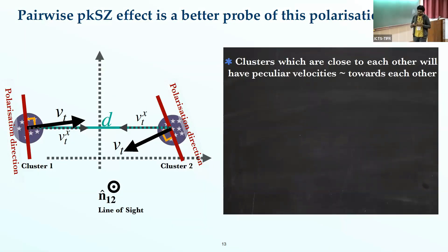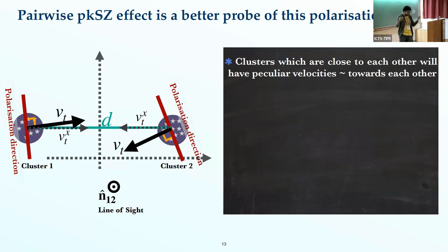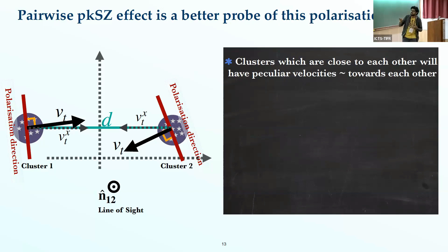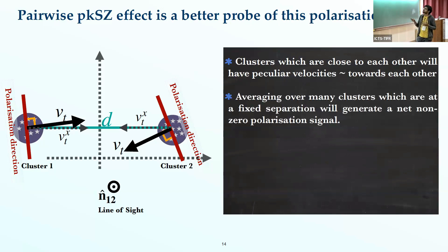Next we considered how to make this signal detectable with upcoming telescopes, which led to the idea of the pairwise polarized Sunyaev–Zeldovich effect. Now looking at galaxy clusters rather than reionization: if two galaxy clusters are close to each other, on average their velocities will be directed toward each other. There will always be a component of transverse velocity directed toward each other, and averaging over many cluster pairs, the polarization signals — always perpendicular to the transverse velocity — yield a net non-zero signal.